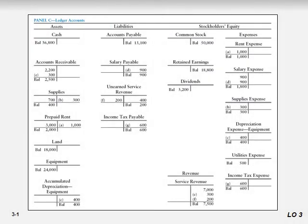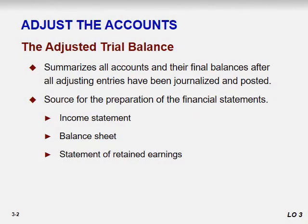The panel here lists down the ledger accounts, or posting of all the assets, liabilities, and stockholders' equity. We have some starting balances and then you just post those entries on the ledgers. Pause the video and try to match it according to your lecture slides — open the lecture slides and see that the entries are posted correctly.